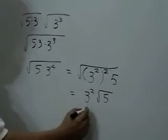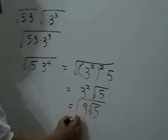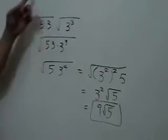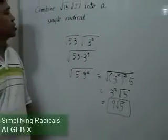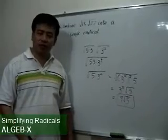3 squared is 9 times square root of 5. So this is the desired single radical, which is equal to square root of 15 times square root of 27.